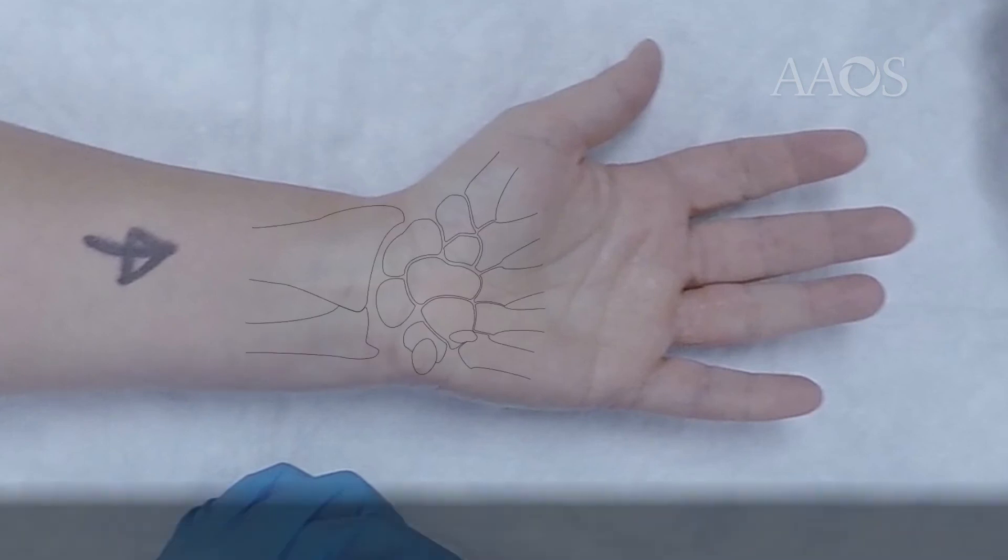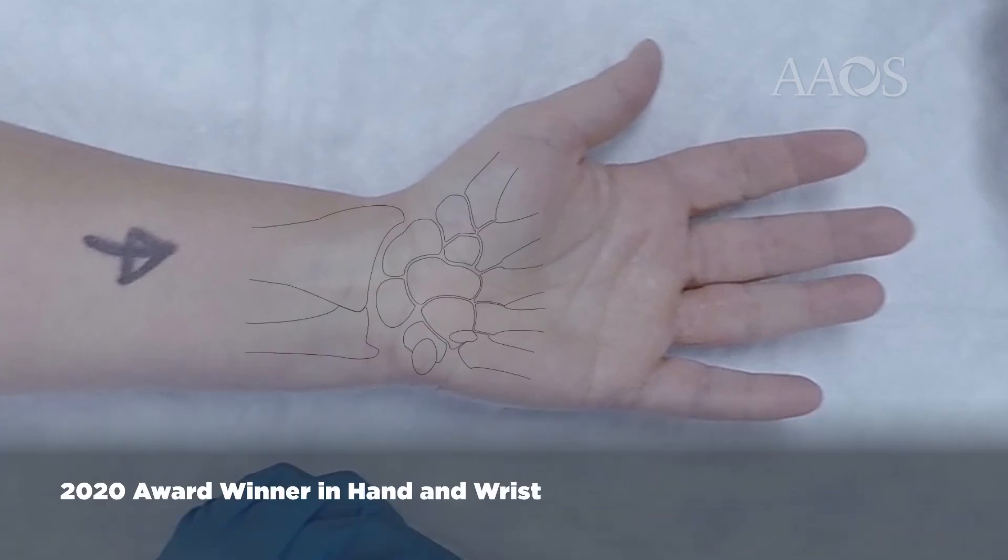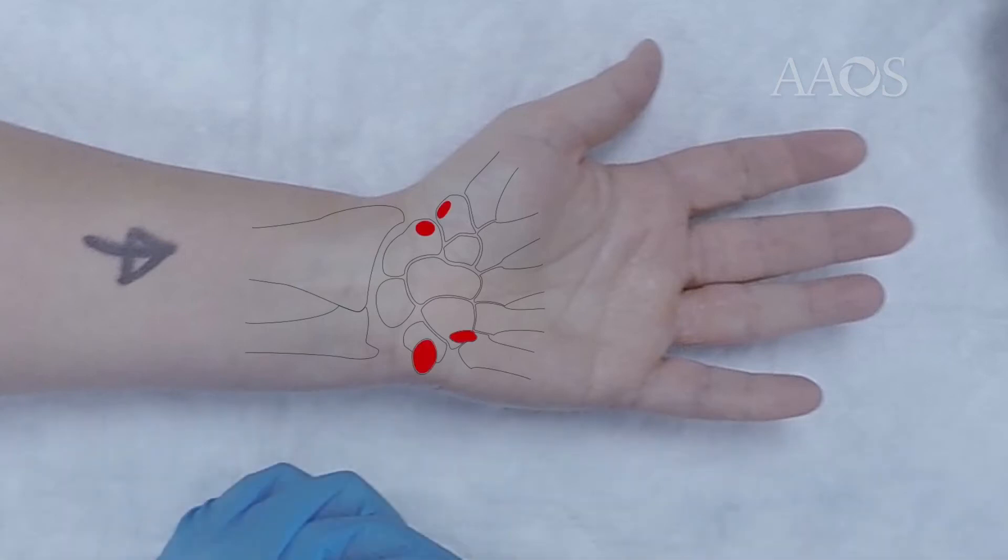The floor of the carpal tunnel is formed by the carpal bones. The roof is the transverse carpal ligament, which has four points of attachment onto the carpal bones. On the radial side it's the scaphoid tubercle and the trapezium, and on the ulnar side the pisiform and the hook of the hamate.